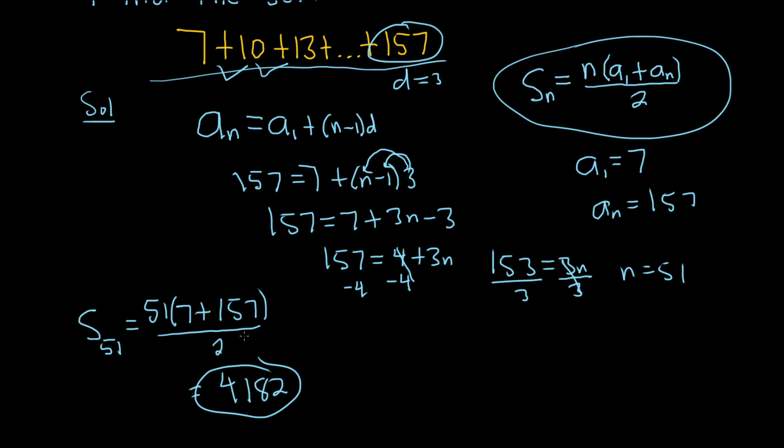So interesting problem. We were originally asked for the sum, we recognize that the terms are part of an arithmetic sequence. This is the formula for the sum of the first n terms. We have a sub 1, we have a sub n, we're just missing n. So we use this formula to find n, then plug it back into the sum formula. I hope this video has been helpful, good luck.